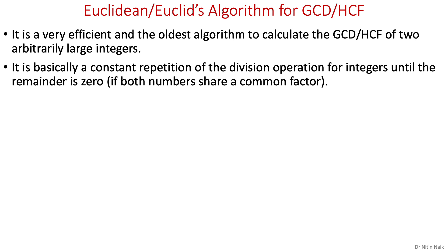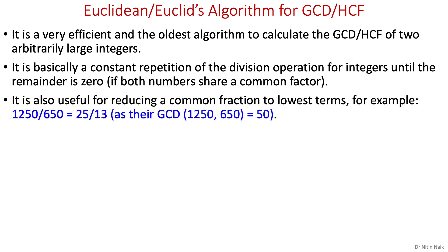Note that we will only get the remainder 0 if both numbers share a common factor or divisor. Otherwise we will get 1, meaning they don't have any common factors or divisor. The Euclidean algorithm is also useful for reducing a common fraction to the lowest terms. For example, 1250 over 650 can also be written as 25 over 13 after dividing by their GCD value 50.